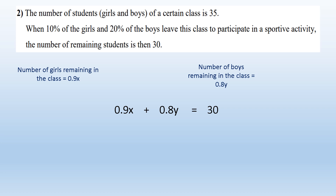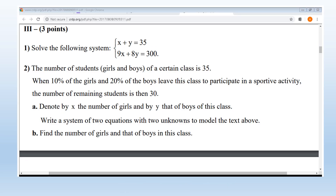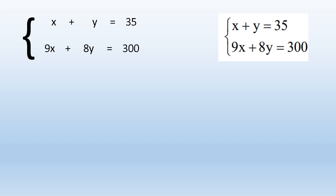By multiplying by 10, it becomes 9X plus 8Y equal 300. Our system is now ready: X plus Y equal 35 and 9X plus 8Y equal 300. This system is identical to the given system in the first part of the question.